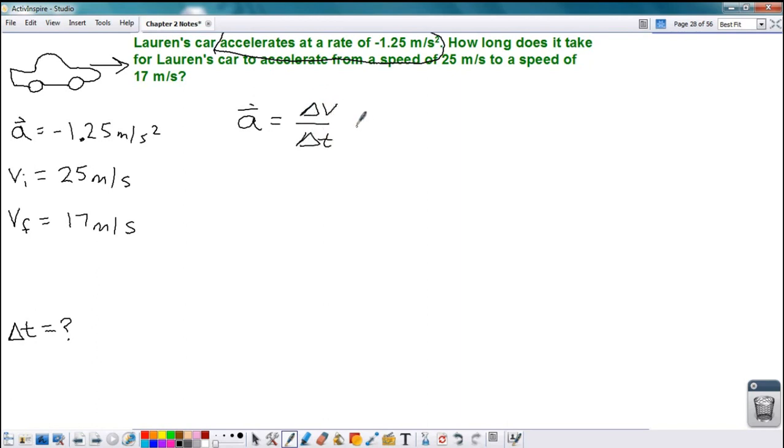And then the equation that we rewrote from this one where we substituted the final minus the initial and then solved for the final. So v_f = v_i + a Δt.